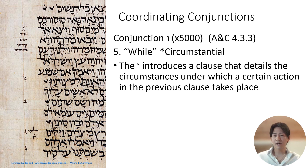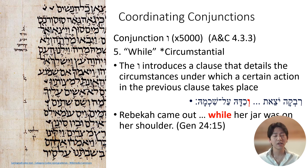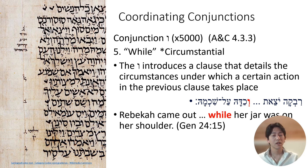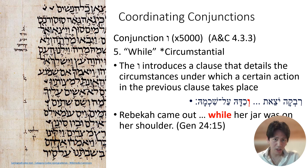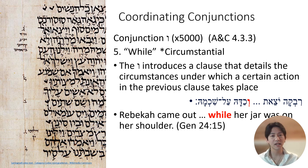Vav can also be translated as 'while,' in a circumstantial sense. The vav introduces a clause detailing the circumstances under which a certain action in the previous clause takes place. In Genesis 24, we are introduced to Rebecca coming to the well. It reads: 'Rebecca came out while her jar was on her shoulder.' The first statement is 'Rebecca came,' and the second part — following vav — answers when or in what circumstance she came: while her jar was on her shoulder.